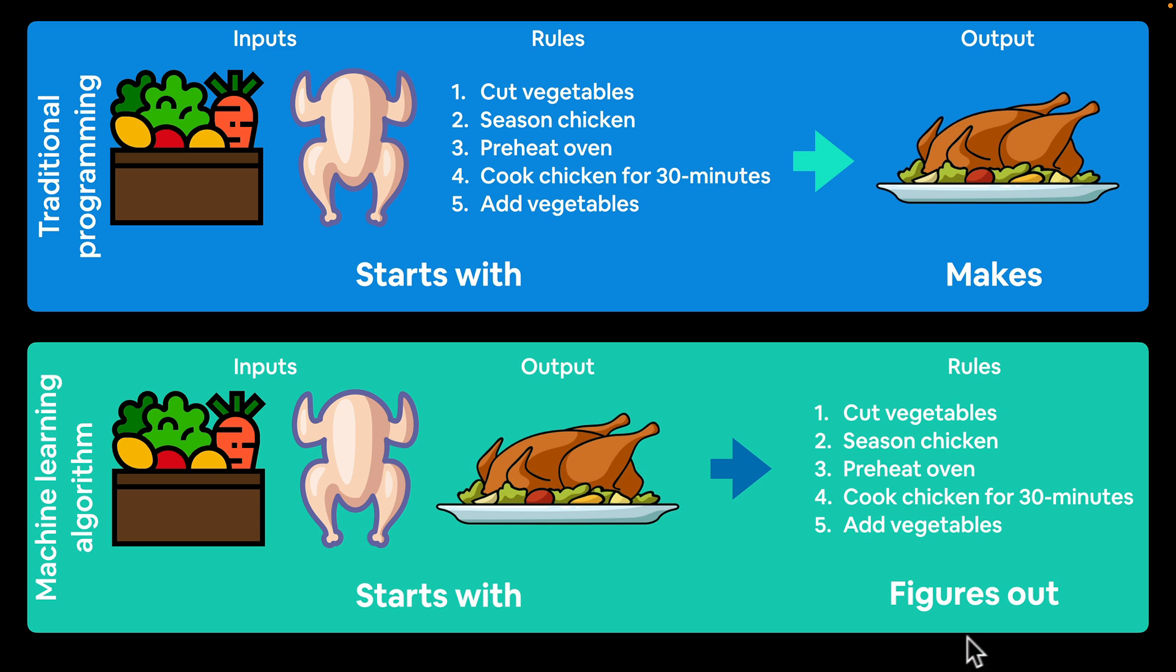If we wanted to write a machine learning algorithm to figure out our Sicilian grandmother's famous roast chicken dish, we would probably gather a bunch of inputs of ingredients such as these delicious vegetables and chicken, and then have a whole bunch of outputs of the finished product, and see if our algorithm can figure out what we should do to go from these inputs to output.